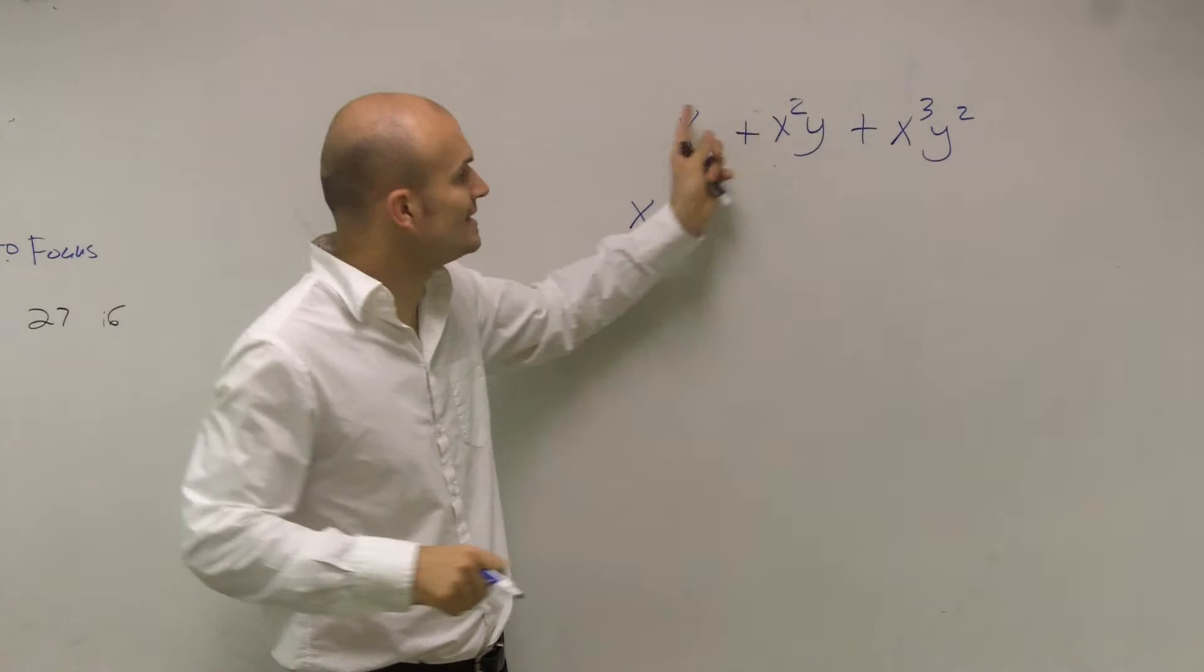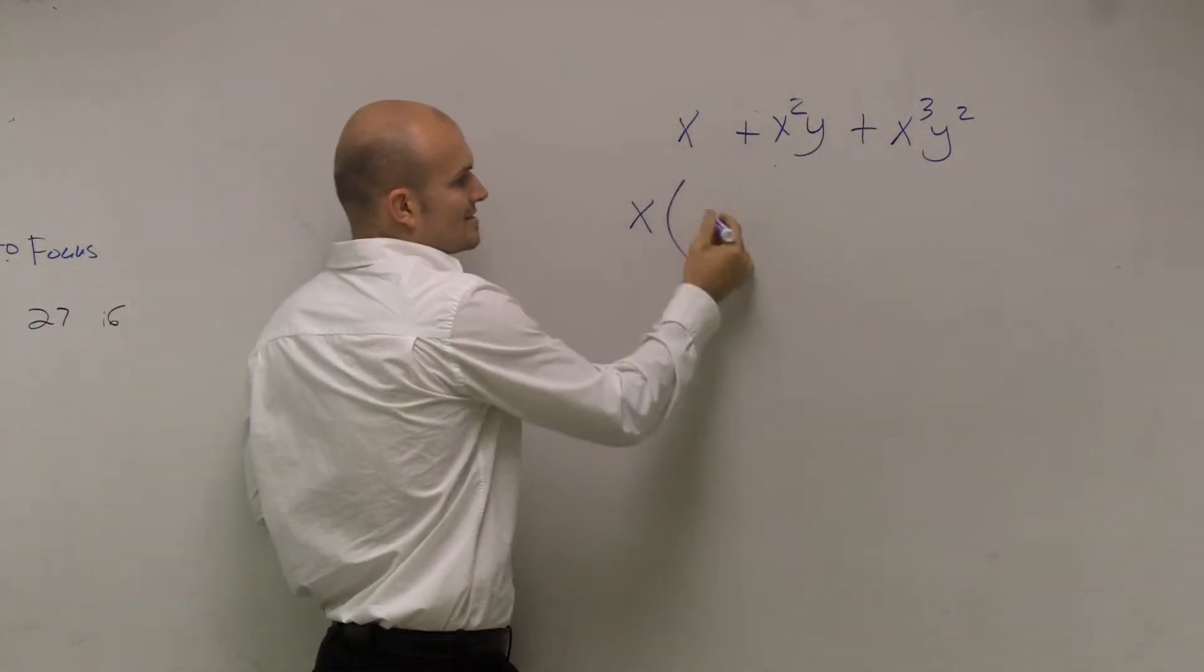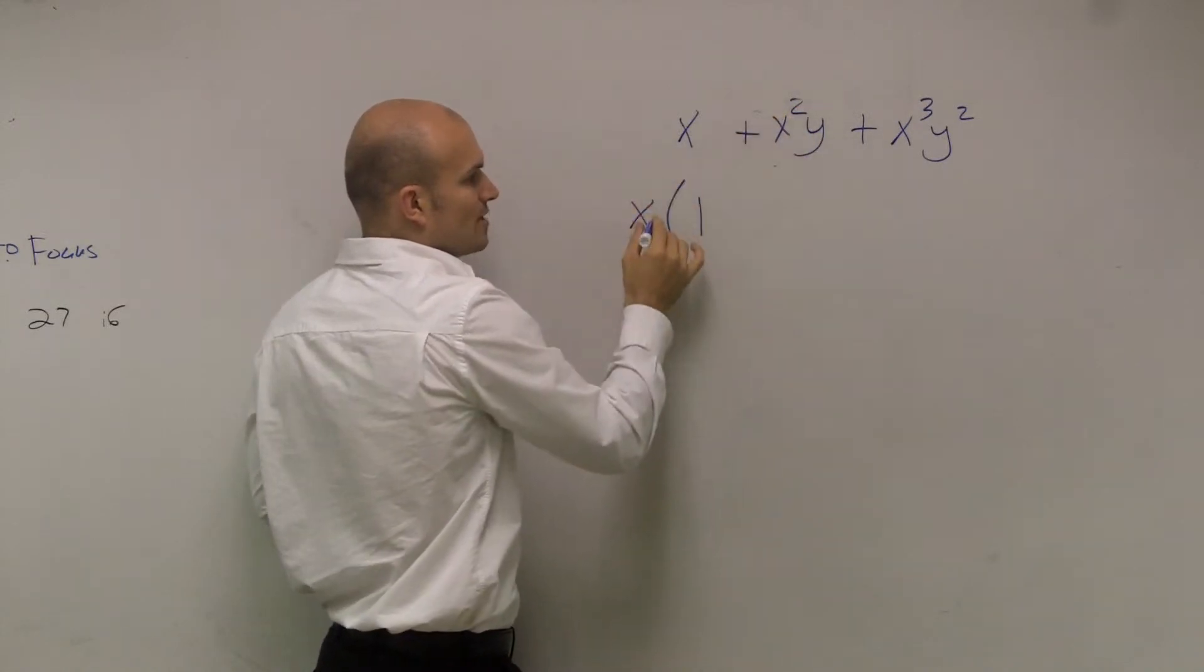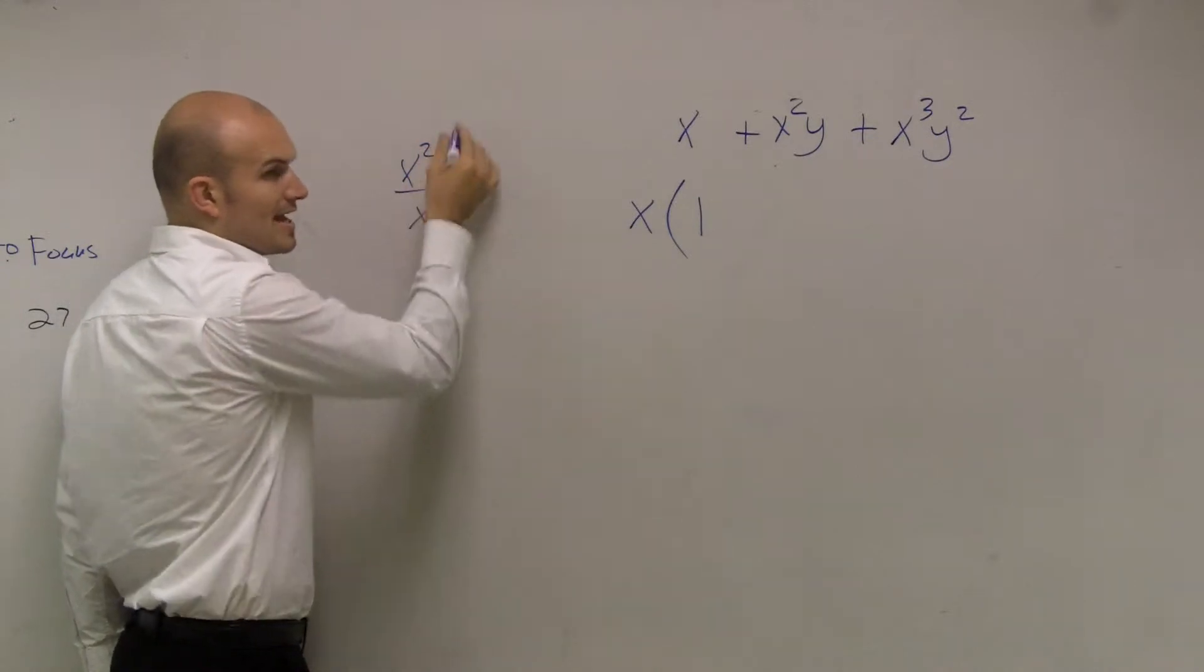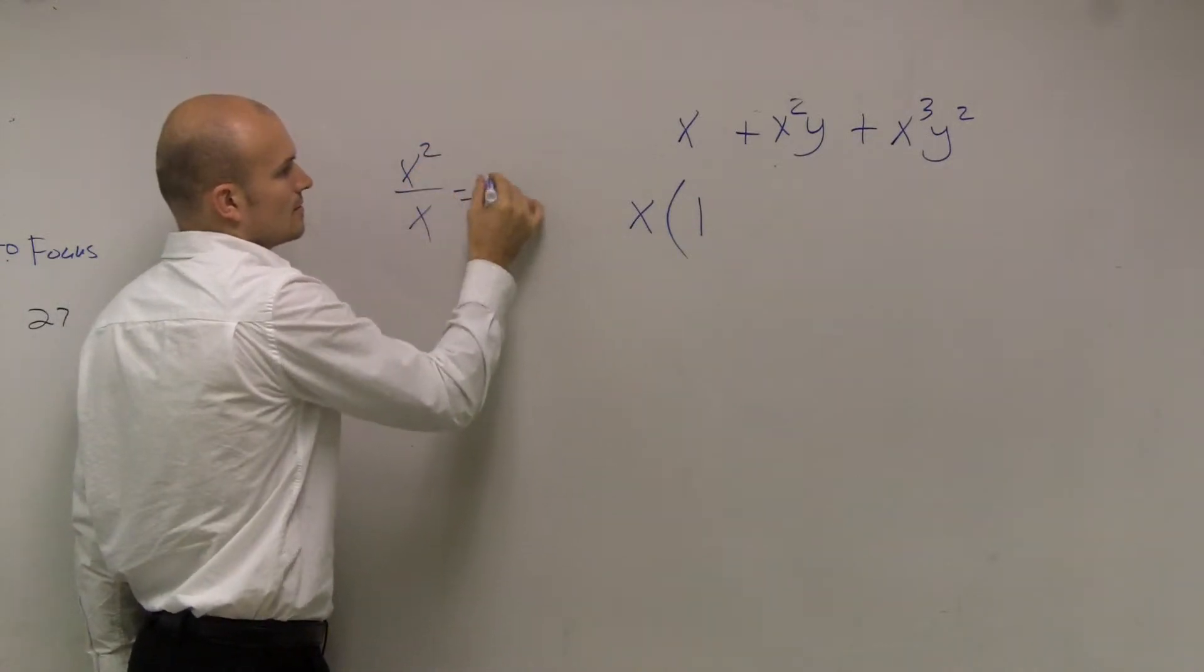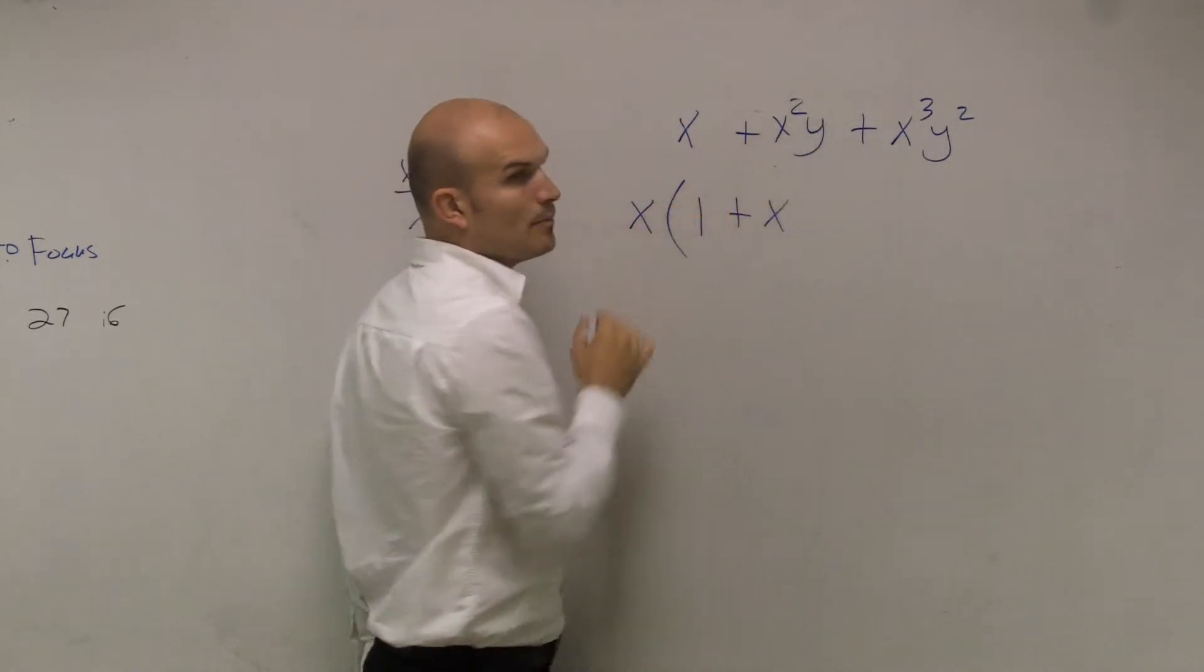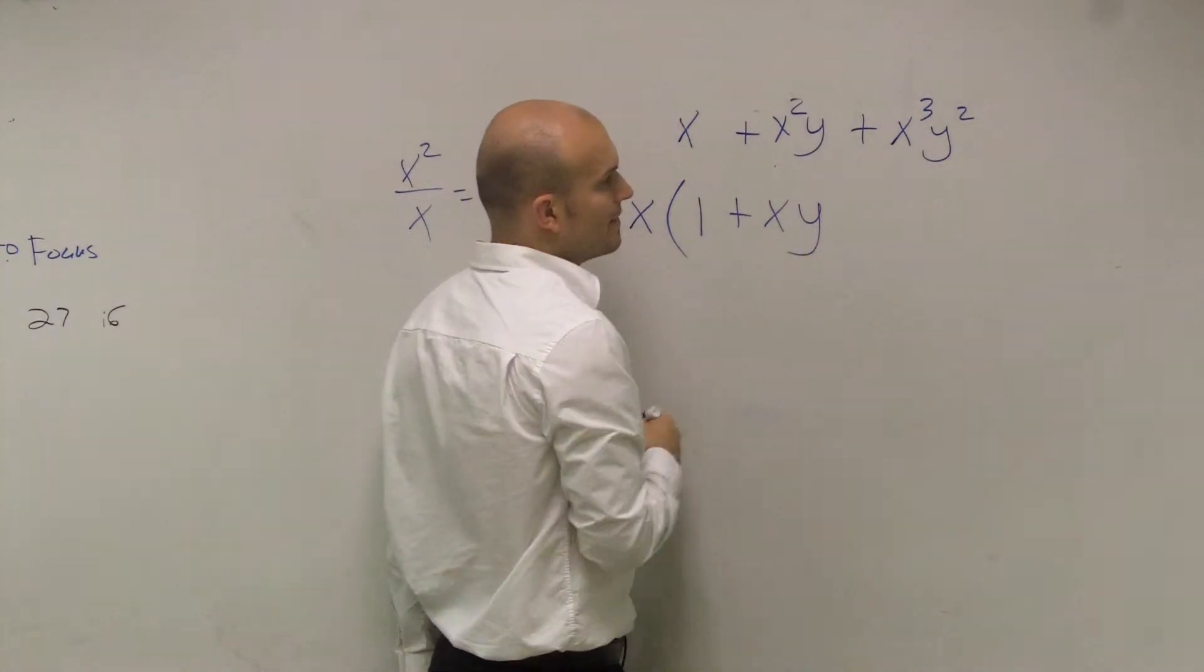Well, what happens when you divide each one of these terms by x? X divided by x is 1. X squared, when I divide an x squared by x, rules of exponents, x squared divided by x equals x. Can I divide y by x? Are those like terms? Nope. So it's just going to leave that y there.